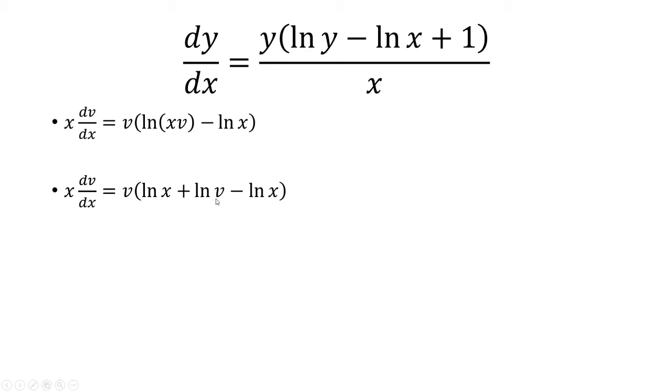The ln of x is going to cancel. I have x times dv over dx equals v times ln of v. And now I have a separable differential equation, bringing the v's on one side and bringing the x's on the other. I have dv over v times ln of v is equal to 1 over x dx.